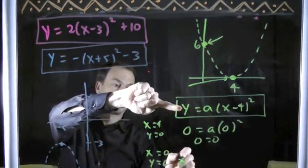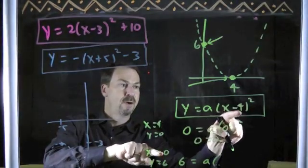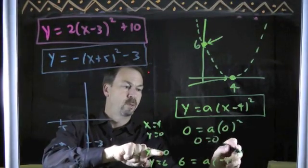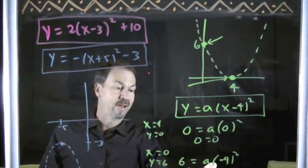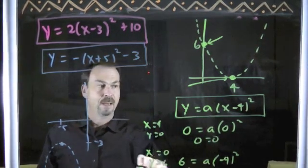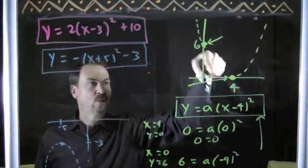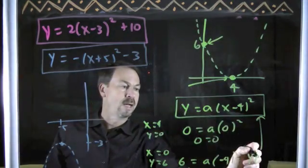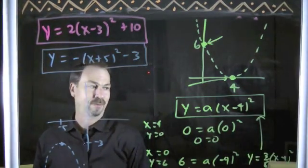Plug into this formula. 6 equals some steepness times 0 minus 4. That's negative 4 squared. This tells me 6 is 16a. Yep, I've got a value for the steepness. It's 6 sixteenths or 3 eighths. Bingo! A formula for this curve, this quadratic curve, this u-shaped curve, is y equals 3/8 (x minus 4) squared. Beautiful.